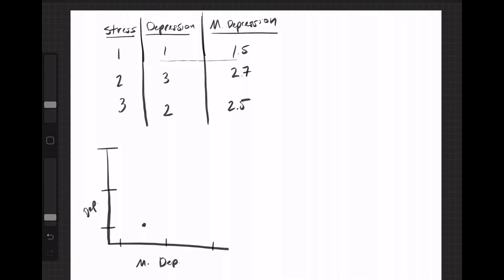And then we've got 2.7 on mother's depression and then 3 — we'll put that about right there. And then 2.5 and 2. So if we looked at this and viewed it as a scatterplot, we've got a strong positive relationship, and we could even fit a regression line. This visual represents the model where depression equals B0 plus B1 times mother's depression. That's all simple stuff.